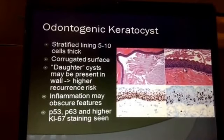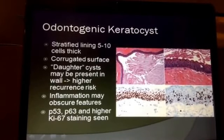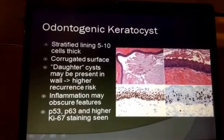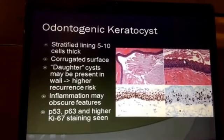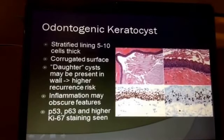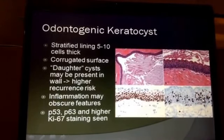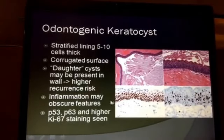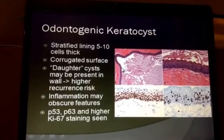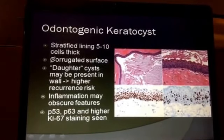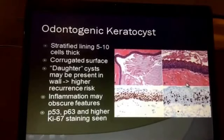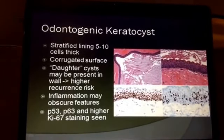The keratocyst has a 5 to 10 cell layer thickness, but unlike the orthokeratinized cyst, there is not a true granular layer. Instead, there's keratinaceous material with a corrugated, up-and-down keratinized layer. This is a neoplasm and will stain for markers like P63 and P53, with a higher-than-average proliferation rate as seen with KI67. Inflammation can occasionally obscure this, so careful examination of all cyst lining is needed. The presence of daughter cysts in the wall is also an important factor to identify and comment on.